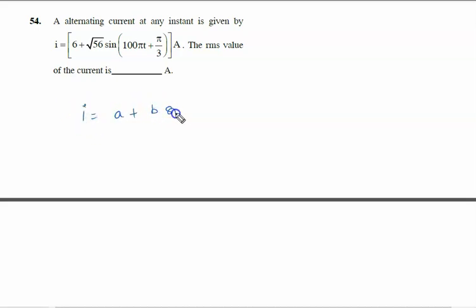a plus b sine ωt, then i_rms is written as root of a² plus b²/2.